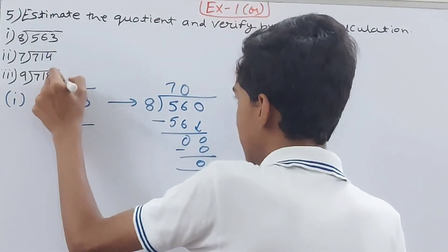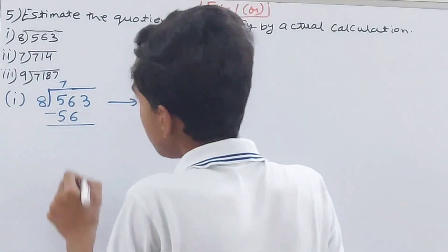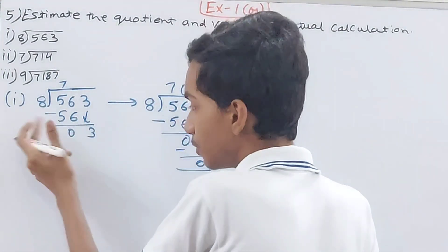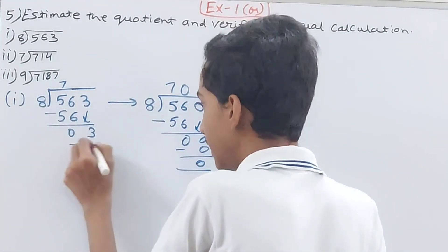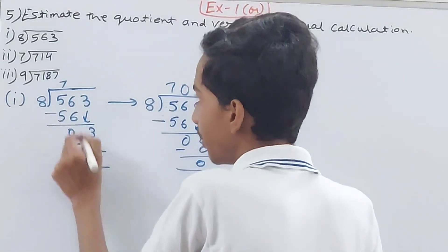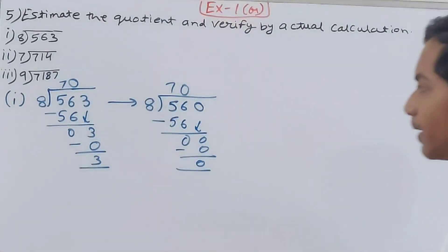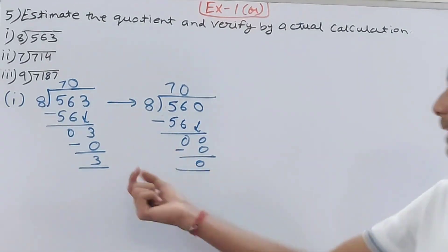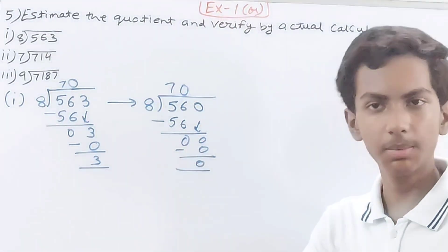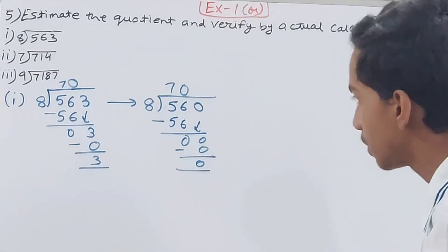Bring down the 3. 3 is not divisible by 8, so minus 0, remainder is 3. Actual quotient is 70 remainder 3. So the difference is just a remainder of 3 — that is how we do this question.